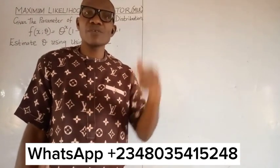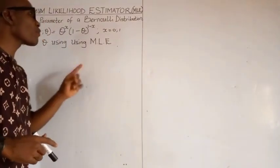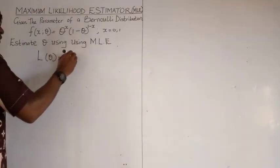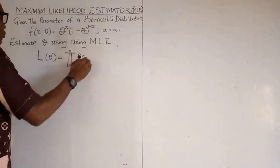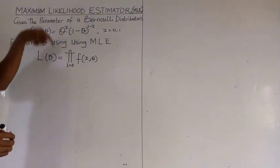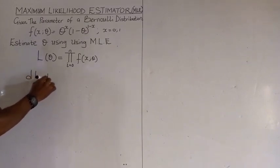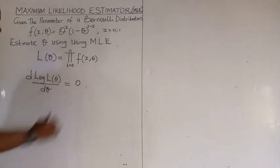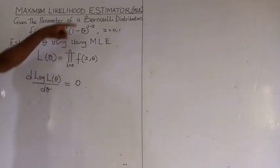How can we estimate the maximum likelihood estimator for the Bernoulli distribution? There is something we need to know before we can do this. The likelihood estimator is equal to the product ranging from 0 to n of that function. The solution to the estimator will be equal to the differential log of the likelihood estimator when it is equal to zero. We can then get the estimator for the Bernoulli distribution.